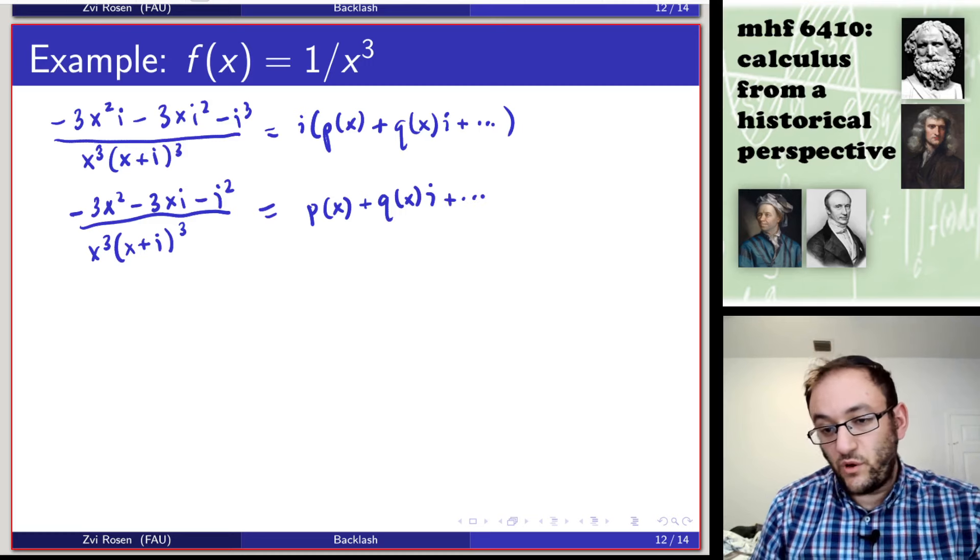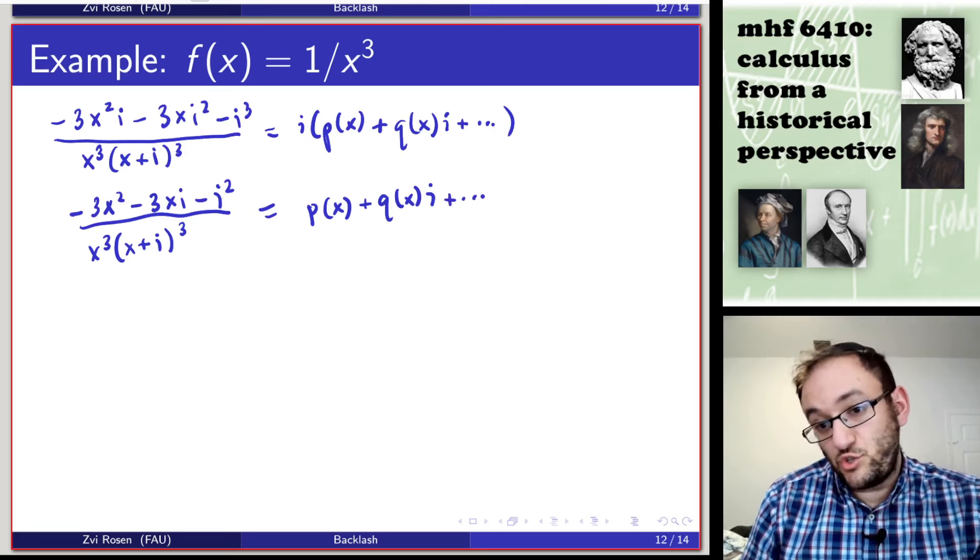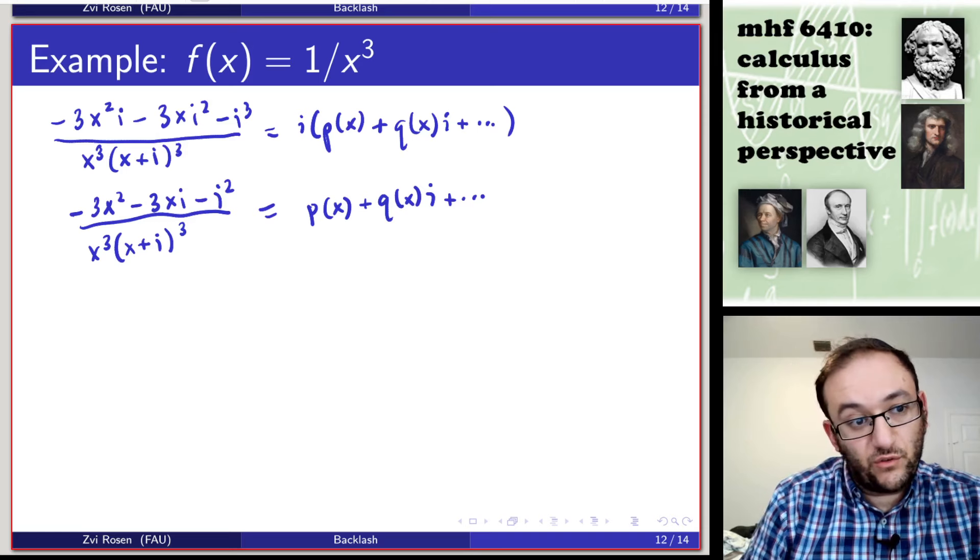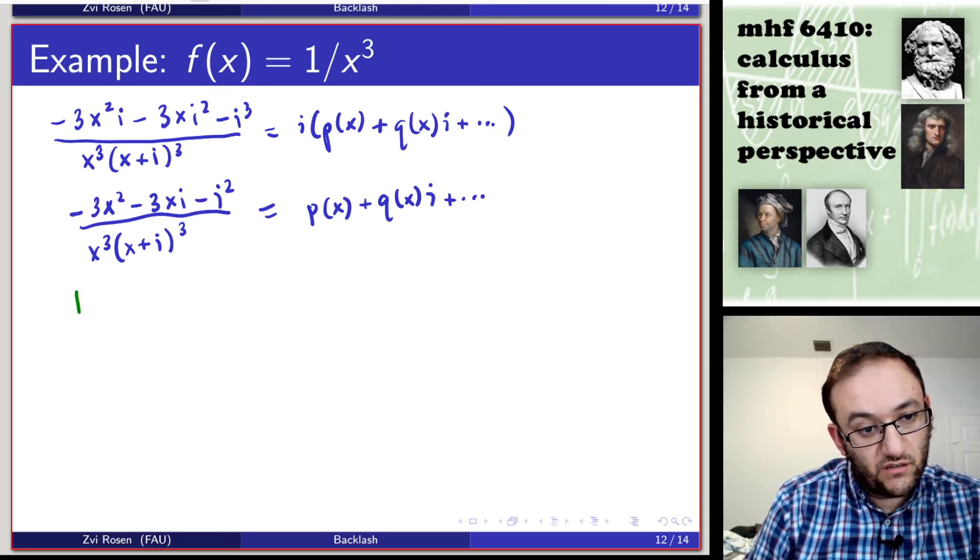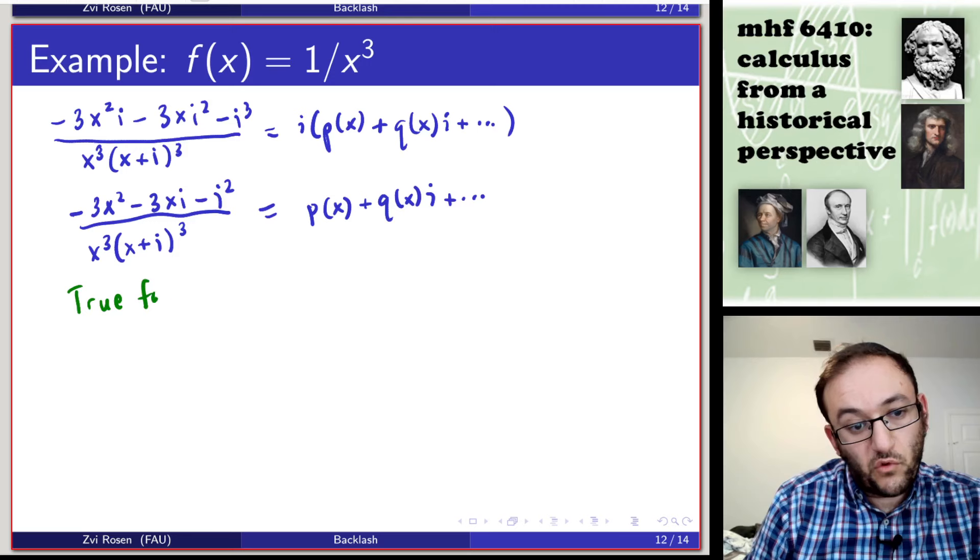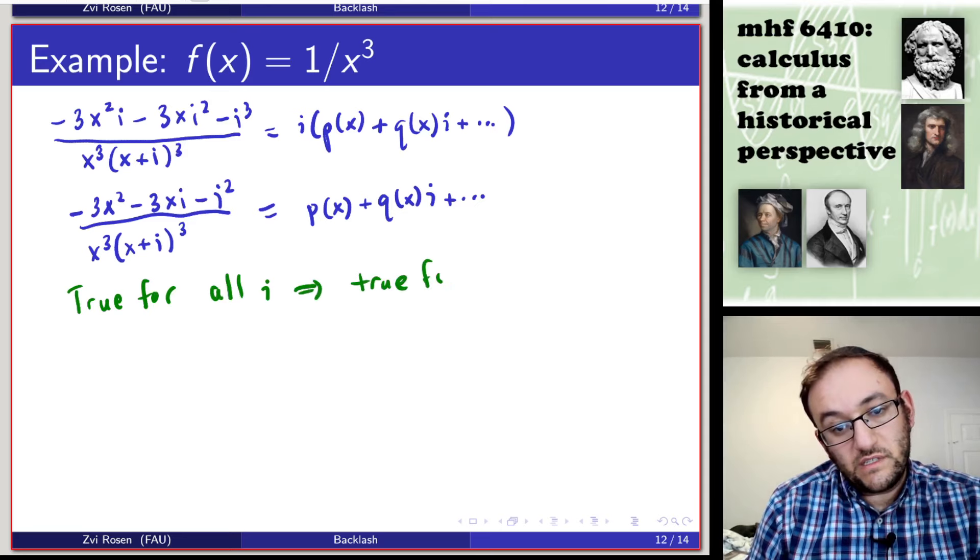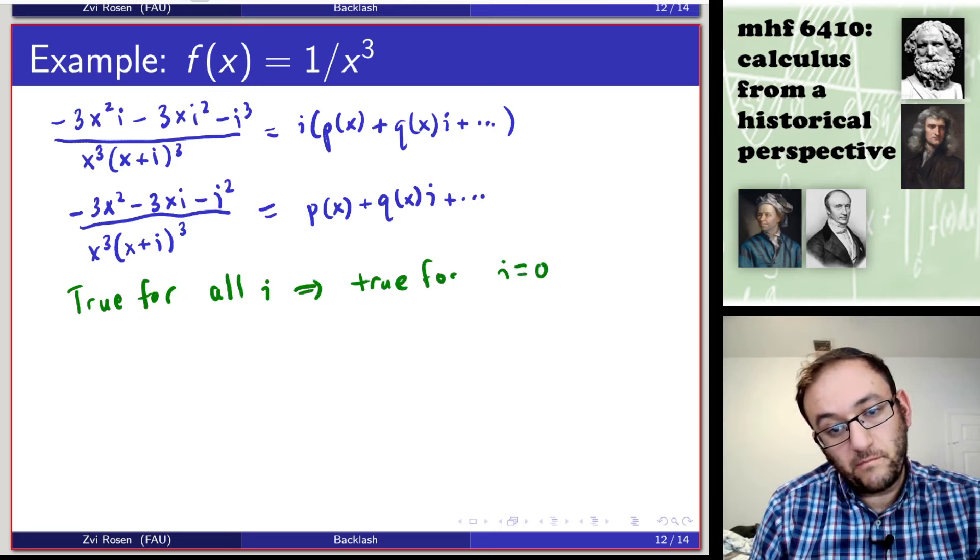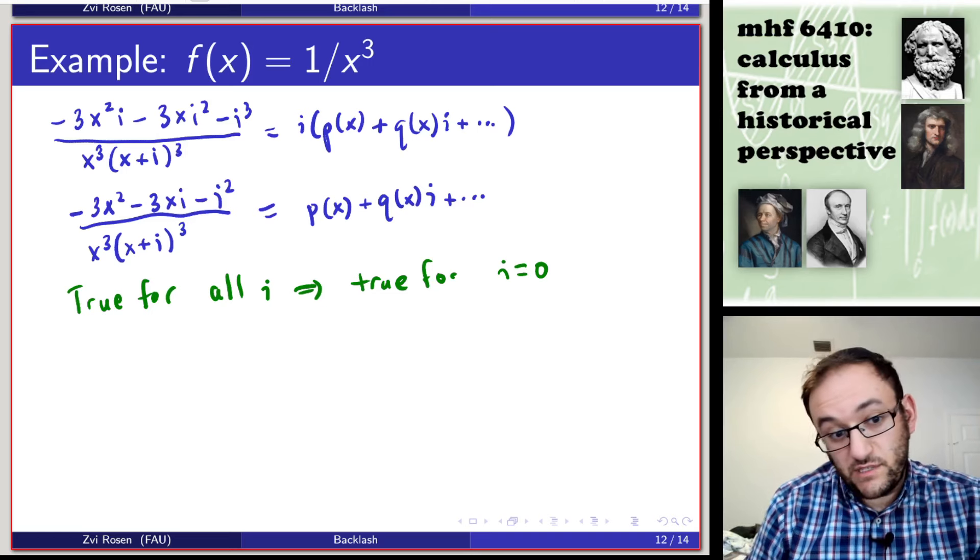Now at this point, if we want to solve this equation, we note that it should be true for every value of i. So this should be true for all i, implies that it should be true for i equals zero. So now let's plug in i equals zero and see what happens.